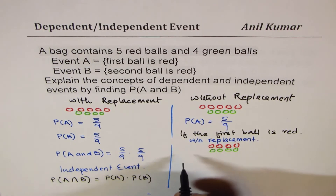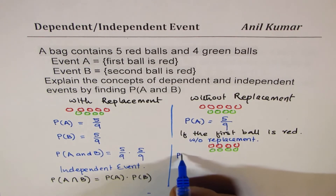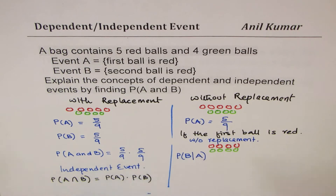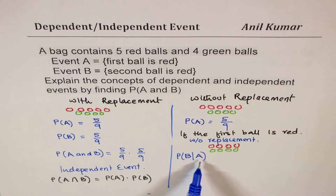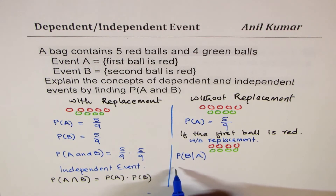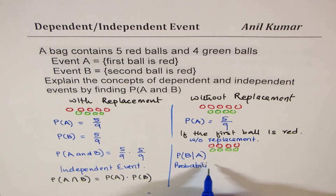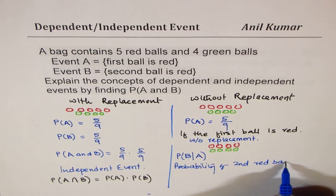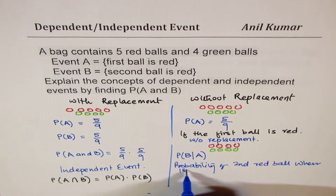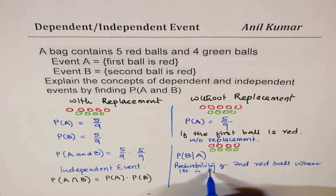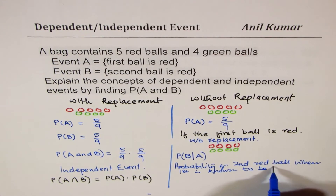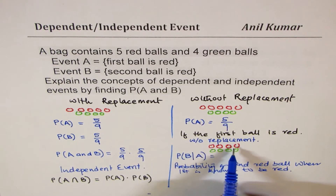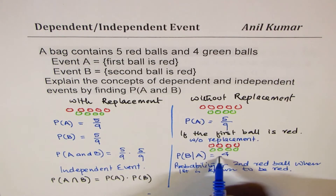So in that case, we are talking about the probability of event B when A has already occurred — that is, the probability that the second ball is red when the first is known to be red. Since we know the first is red, we are left with four red balls out of a total of eight balls, so this probability is four over eight.